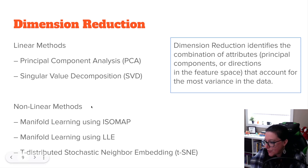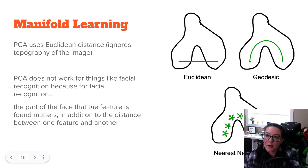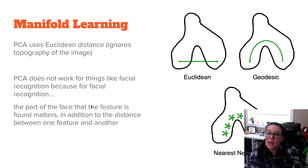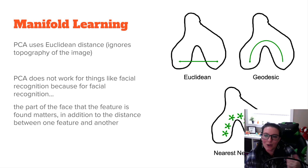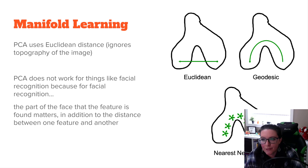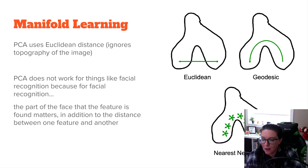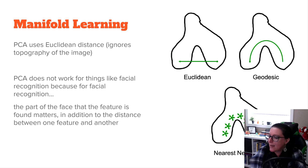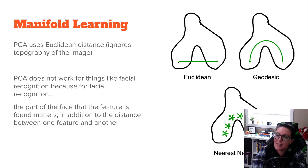To help us understand how this works: when we use principal component analysis, as we talked about in the previous videos, it uses Euclidean distance. So it's a distance measure, which is why we do standard scaling when we use it. The thing with linear relationships and Euclidean distance is that it ignores the topography of the image.